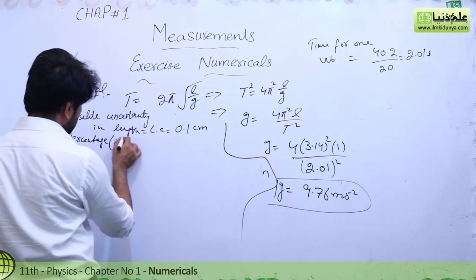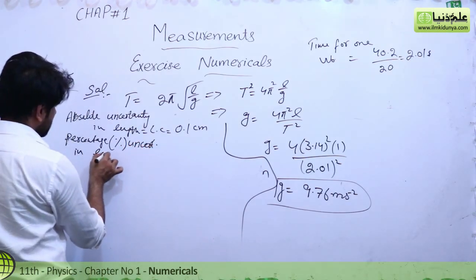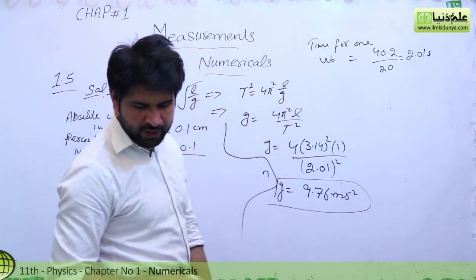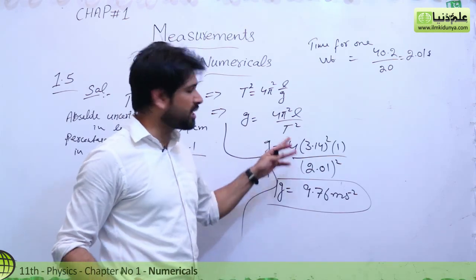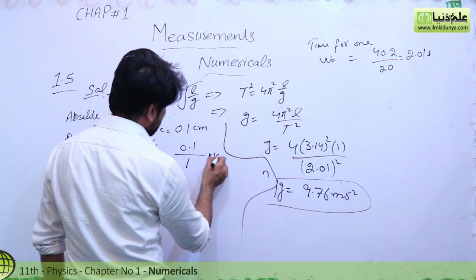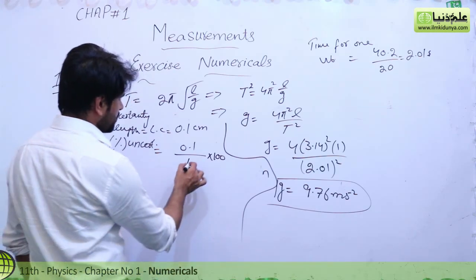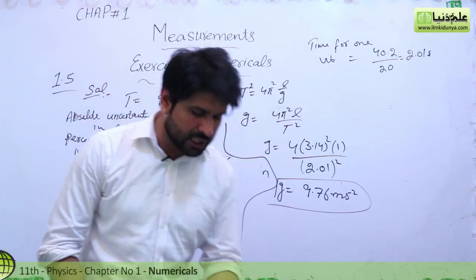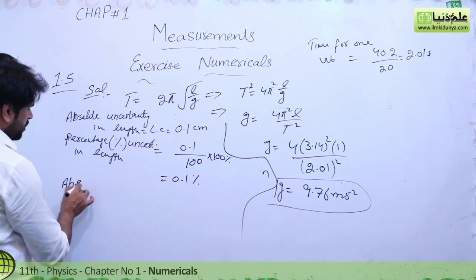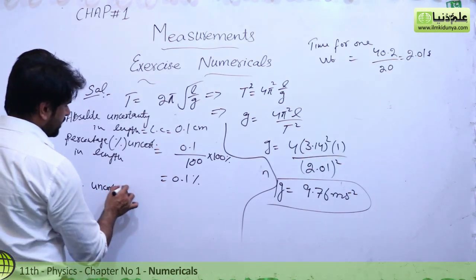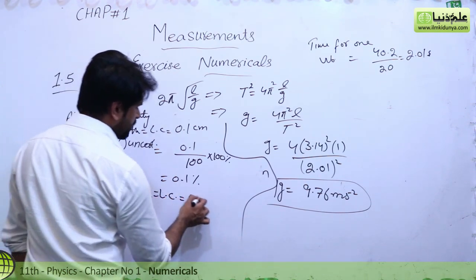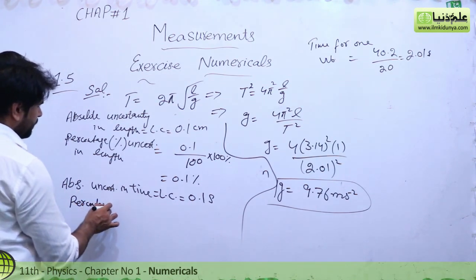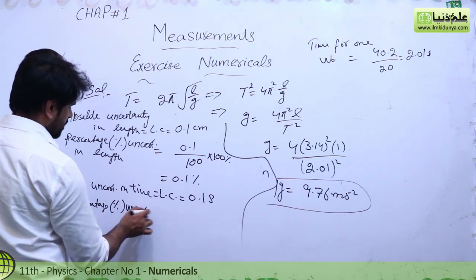Percentage uncertainty in length = (least count / length) × 100 = (0.1 / 100) × 100 = 0.1%. The hundreds cancel out, giving 0.1%. The stopwatch least count was given as 0.1 seconds. Similarly, we calculate the percentage uncertainty in time.